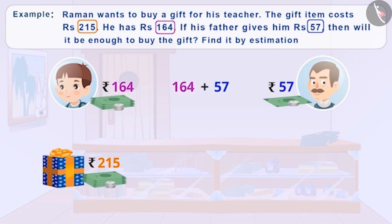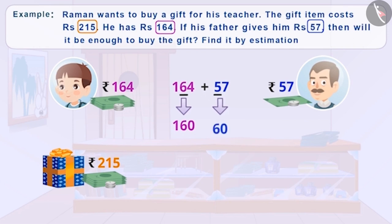Whenever there is addition or subtraction, consider the smallest number. Here, 57 is the smallest number. Then find the highest place value of that number. The highest place value in 57 is tens. So we will approximate both numbers to tens. The approximation to tens of 164 is 160, and 57 is 60. Their total is 220, more than 215. Therefore, he will have enough money.